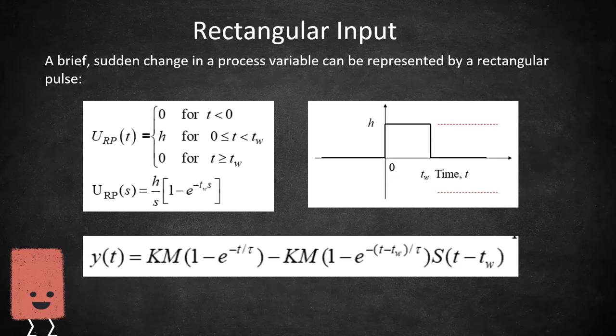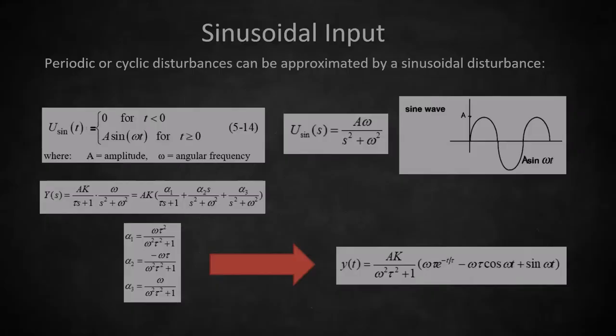As you can see on the bottom, our final output function is a lot more complicated than the original unit step we talked about earlier.